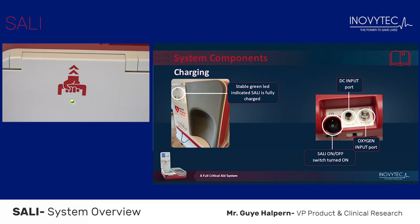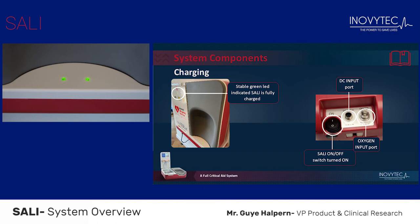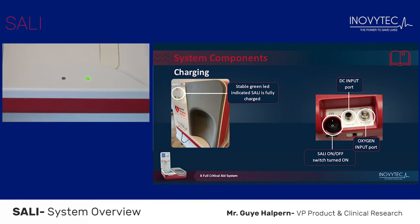A steady green light indicates the unit is fully charged. A blinking green light indicates the unit has more than 50% power and is being charged. A blinking orange light indicates the unit has less than 50% power and is being charged. A blinking red light indicates there is a problem with the connection to the cloud. A steady red light indicates there is a problem with the battery or in the charging protocol.